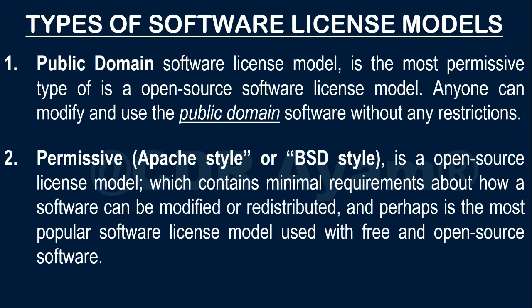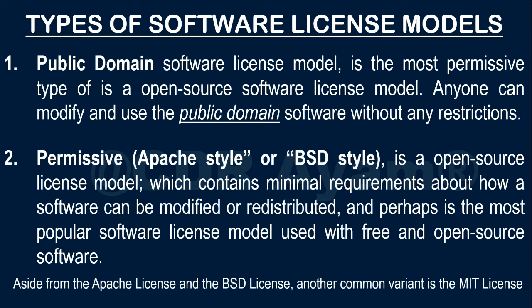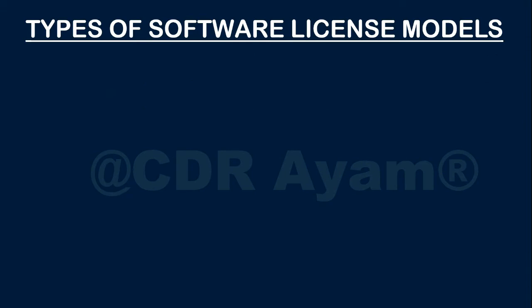The permissive software license is one of the 4 open source license models. It is also known as the Apache style or the BSD style. This particular type of open source license model contains minimal requirements about how a software can be modified or redistributed, and is perhaps the most popular software license model used with free and open source software. Aside from the Apache license and the BSD license, another common variant of the permissive software license is the MIT license.